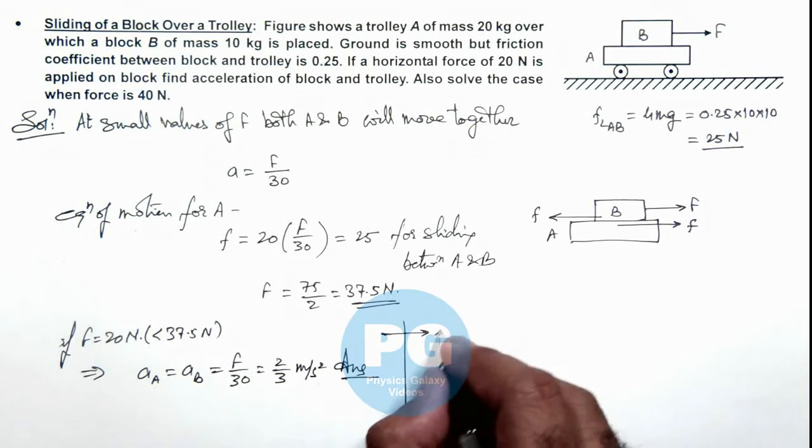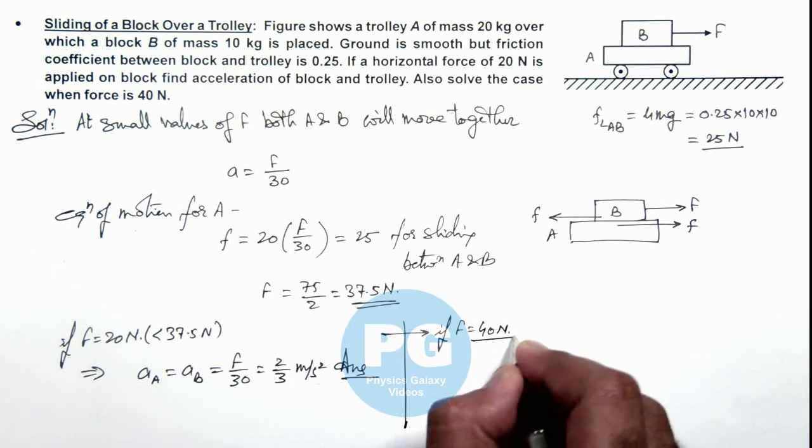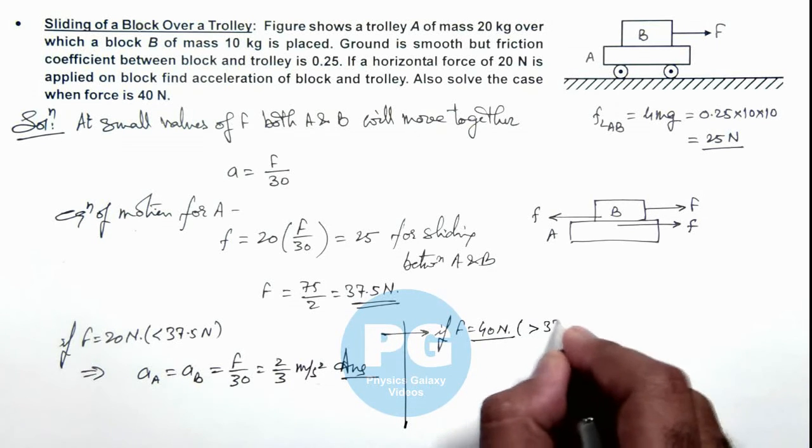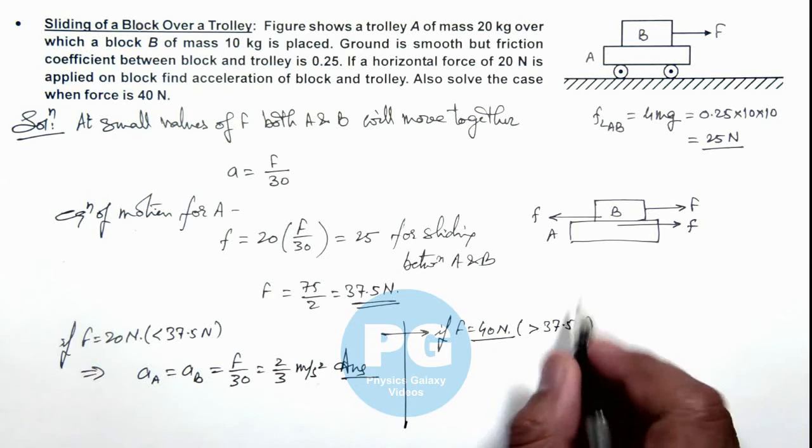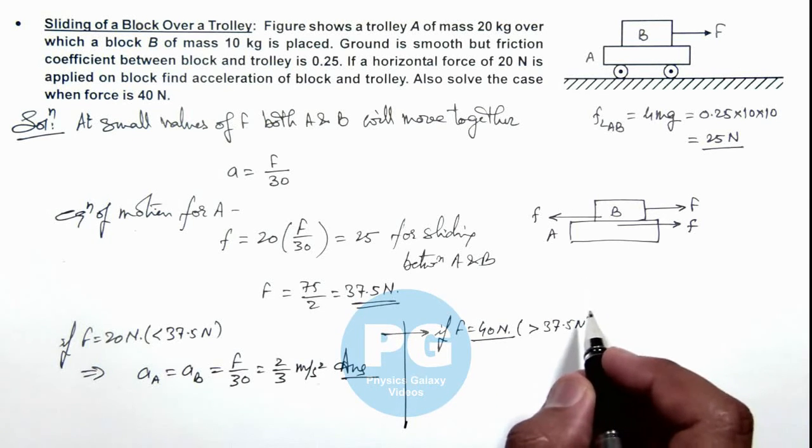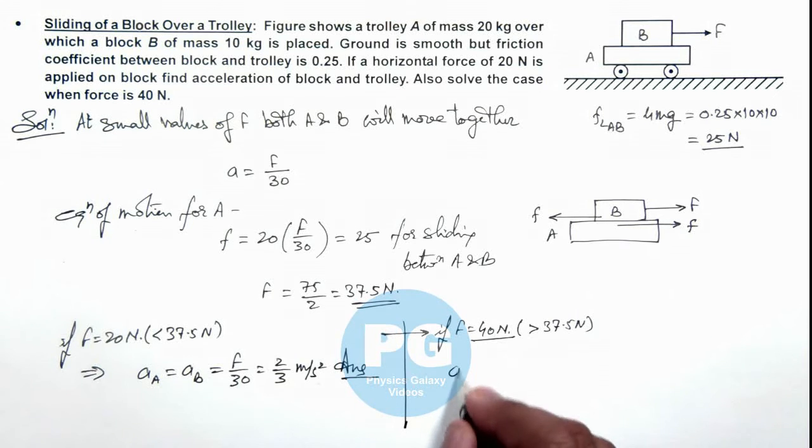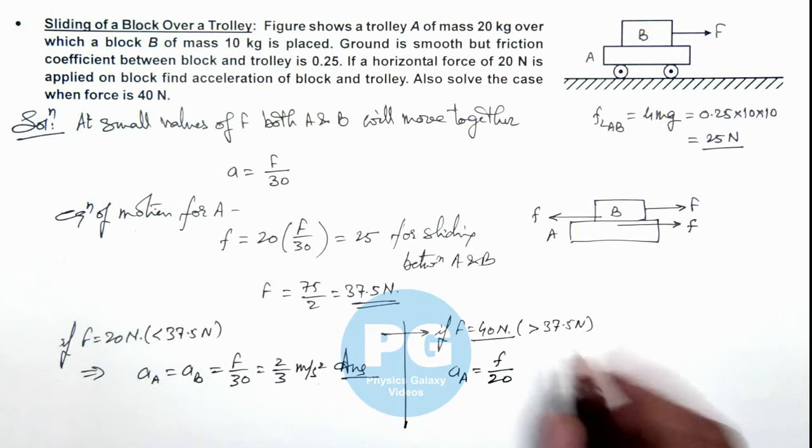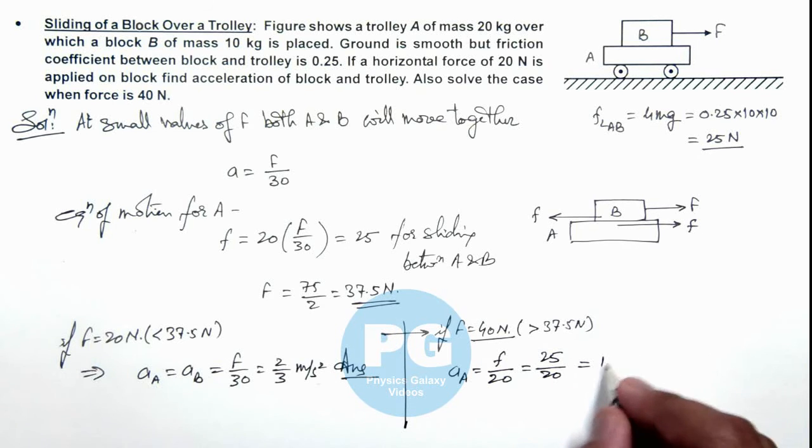And if we continue this for if F is equal to 40 newton, which is greater than 37.5 newton, that means beyond this value both the blocks will move independently and the value of friction is at 25 newton. So acceleration of block A we can write as friction by its mass which is 20. The value of friction will be limiting that is 25 by 20, so this is giving us a value 1.25 meter per second square.